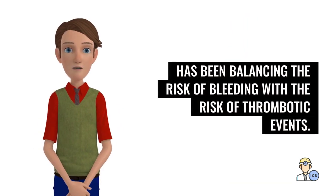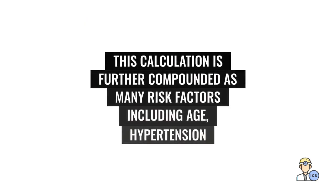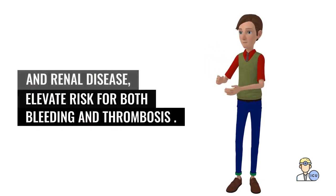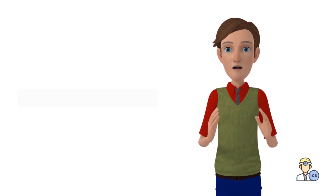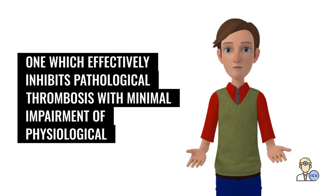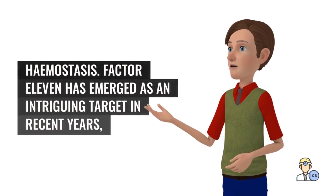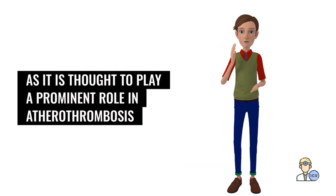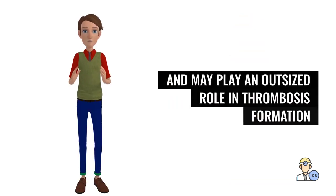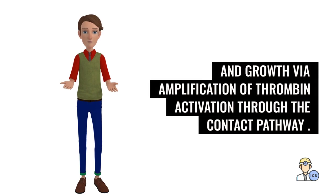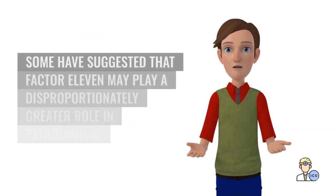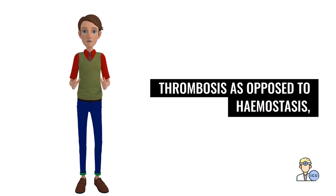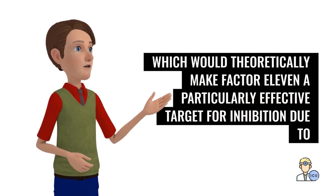The inevitable dilemma in patients with indications for anticoagulation has been balancing the risk of bleeding with the risk of thrombotic events. This calculation is further compounded as many risk factors, including age, hypertension, and renal disease, elevate risk for both bleeding and thrombosis. The ideal anticoagulant agent would be one which effectively inhibits pathological thrombosis with minimal impairment of physiological hemostasis. Factor XI has emerged as an intriguing target, as it is thought to play a prominent role in atherothrombosis and may play an outsized role in thrombosis formation and growth via amplification of thrombin activation through the contact pathway. Some have suggested that factor XI may play a disproportionately greater role in pathological thrombosis as opposed to hemostasis.